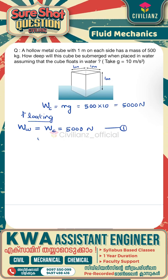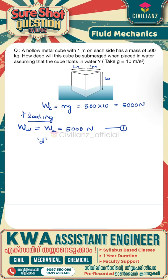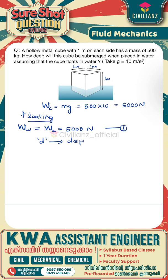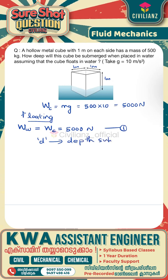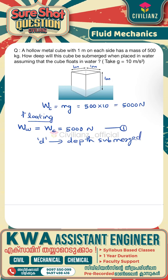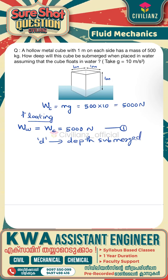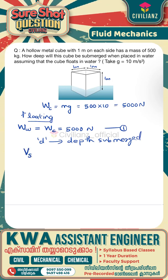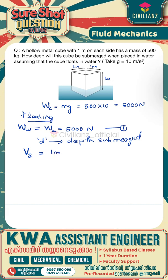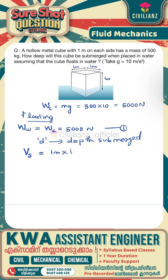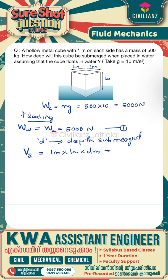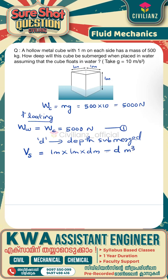We will assume that let D be the depth of the portion of the cube which is submerged in water. The volume of the submerged portion will be equal to 1 meter by 1 meter by D meter, which is equal to D meter cube.